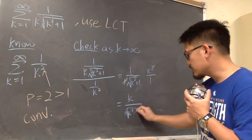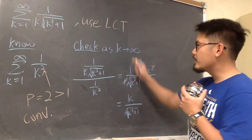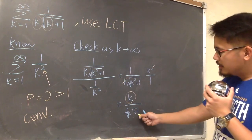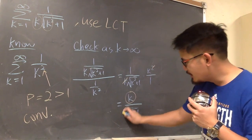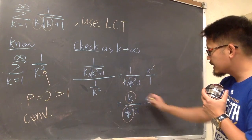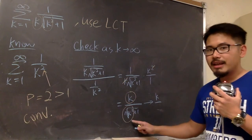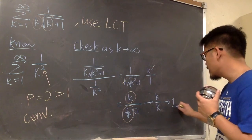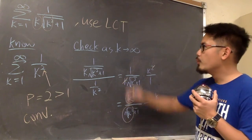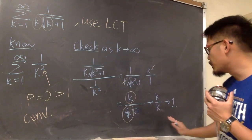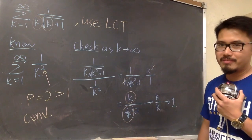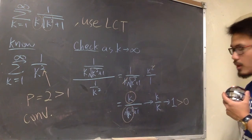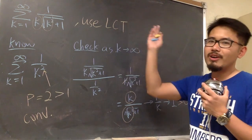After cancellation we have k over square root of k squared plus 1. As k goes to infinity, we ignore the plus 1 and focus on the highest power, so this approaches k over square root of k squared, which is k over k, equal to 1. We are using the limit comparison test and the limit we got is 1. Since 1 is greater than 0 and finite, we can use this result to draw a conclusion.